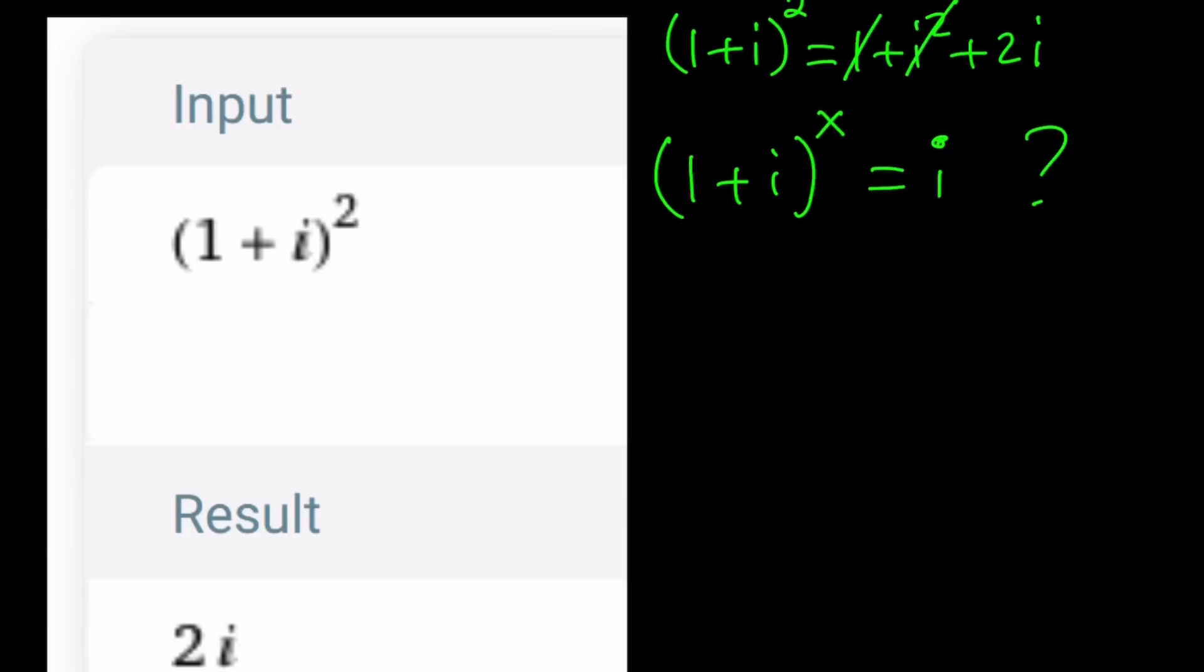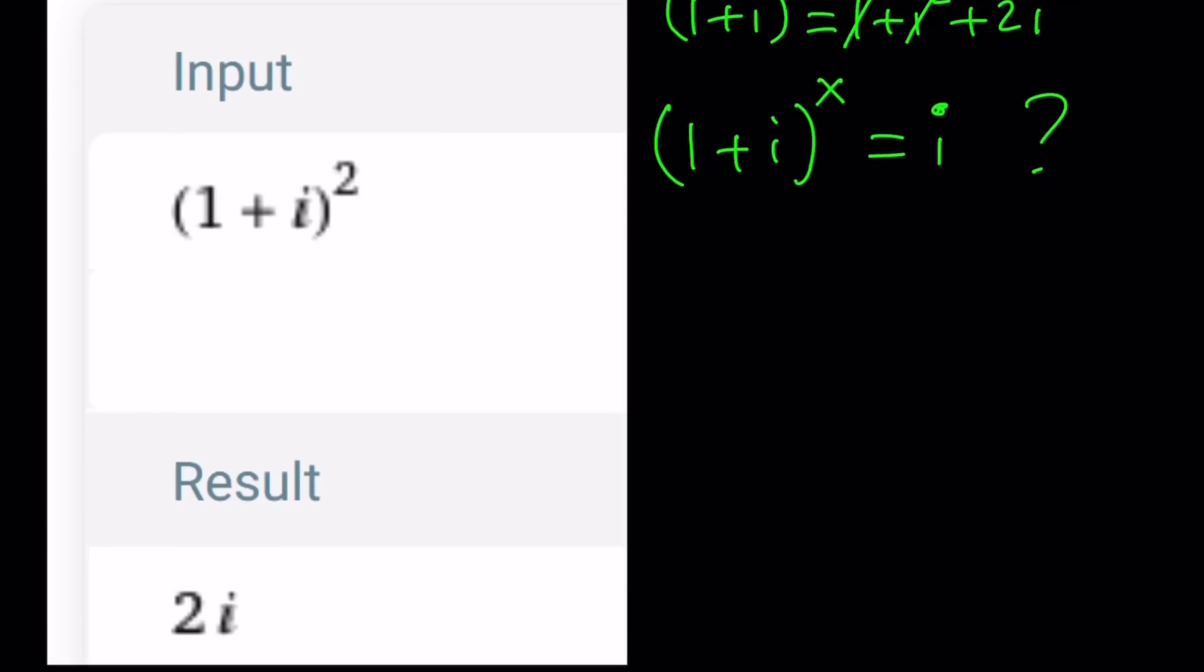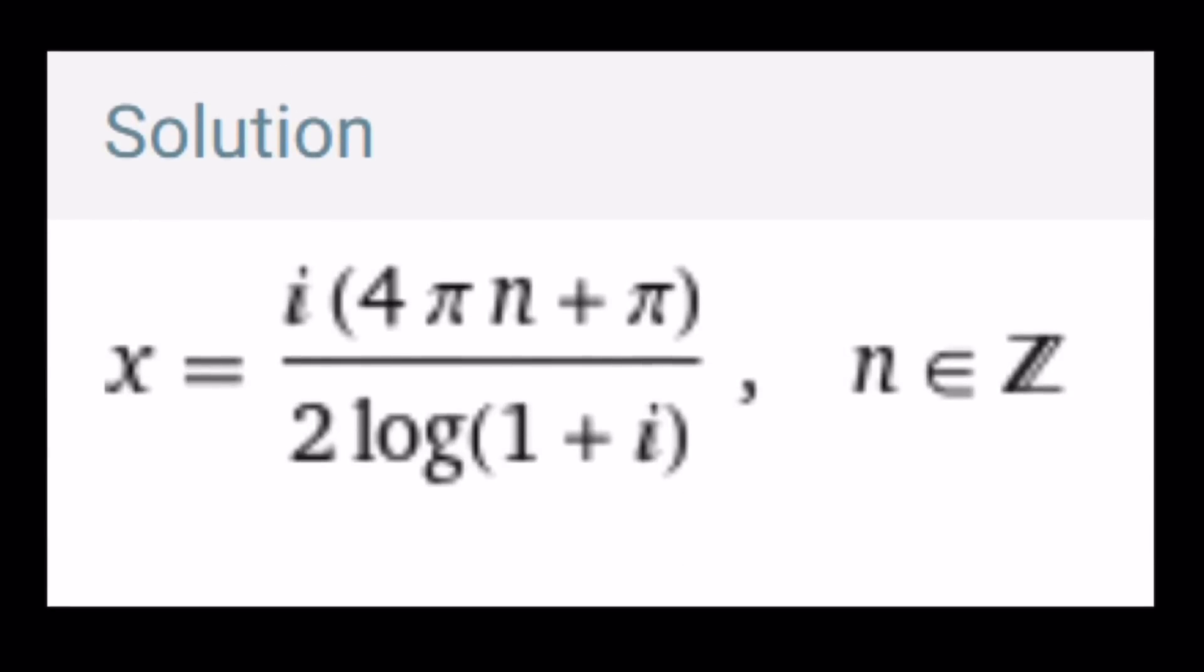Just to show you what the solution looks like, I included the Wolfram Alpha solution here, and you can see that the solution is not going to be very straightforward. Notice that we have the log of something at the bottom, which is supposed to be the natural log. I'm going to give you a better looking solution than this one.